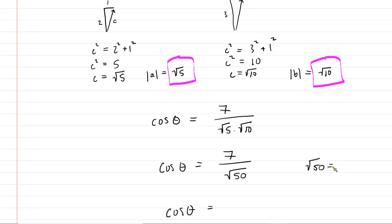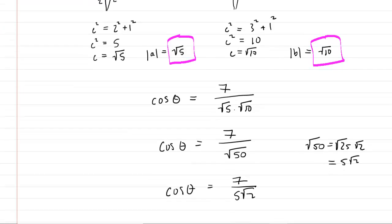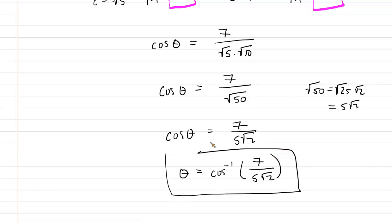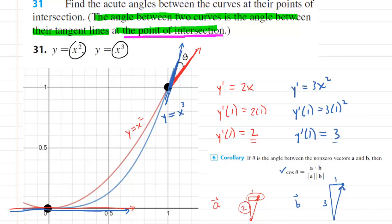We can rewrite the square root of 50 as the square root of 25 times the square root of 2, which is 5 root 2. So cosine of theta equals 7 over 5 root 2. To get the angle, we take the inverse cosine of that fraction: theta equals the inverse cosine of 7 over 5 radical 2. Using a calculator in degree mode gives approximately 8.13 degrees. So the angle between the two tangent lines at x equals one is about 8 degrees.